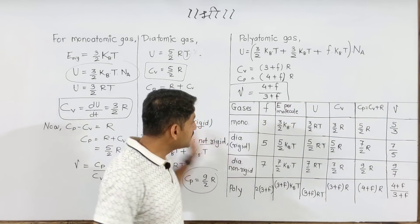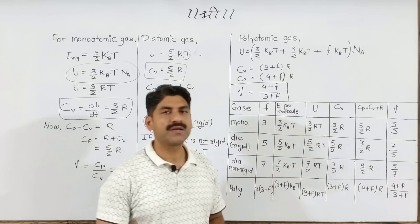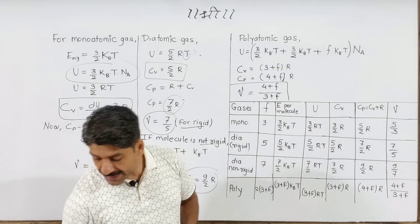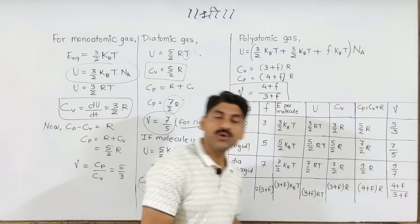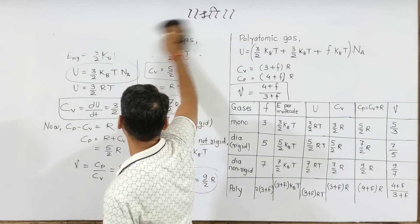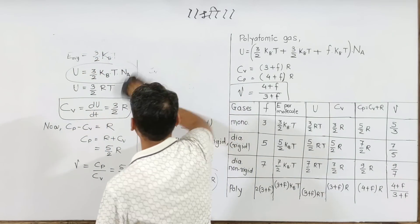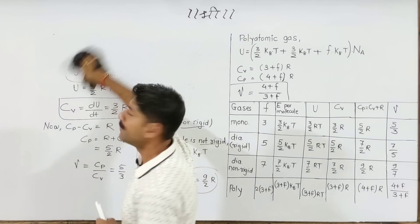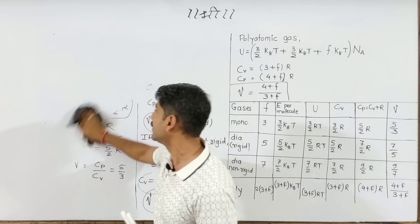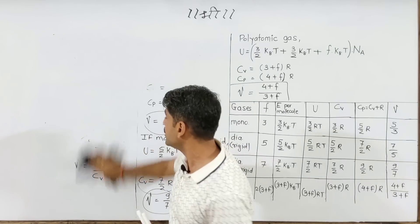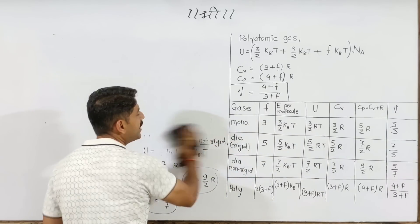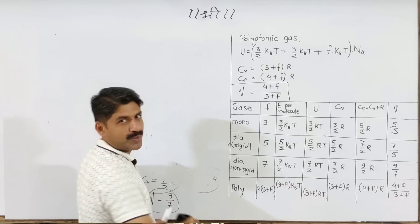All these formulas are given in a table here — please practice them. Now we will move to numerical problems and MCQs based on these formulas. There are not many questions in the exam, and they are quite easy once you know which formula to apply. Cp minus Cv equals R is the most important relation to remember.